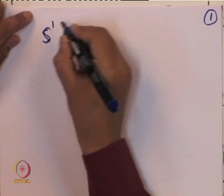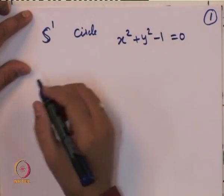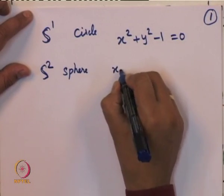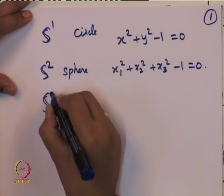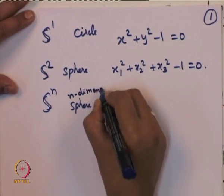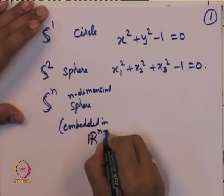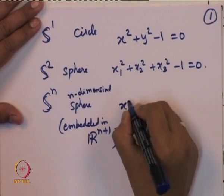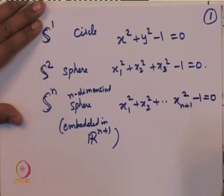We saw some standard terms: S1 is a circle, meaning the set defined by x² + y² − 1 = 0. S2 was our standard sphere defined by x₁² + x₂² + x₃² − 1 = 0. Similarly, we can have an n-dimensional sphere Sn embedded in R^(n+1), where R stands for the set of real numbers with components x1 up to x(n+1).